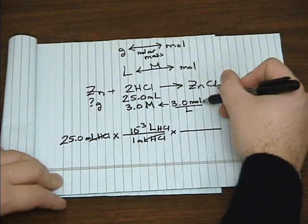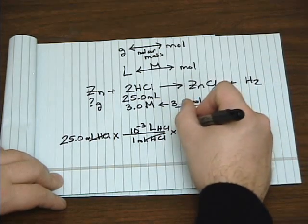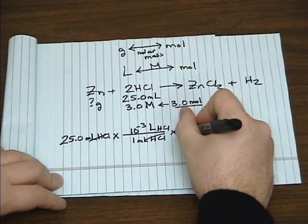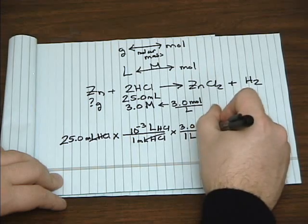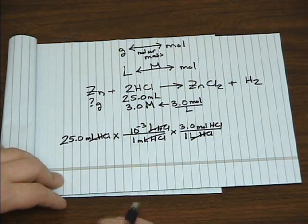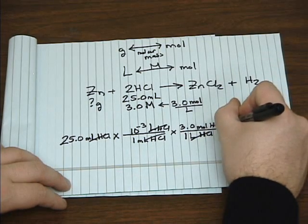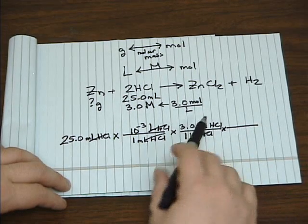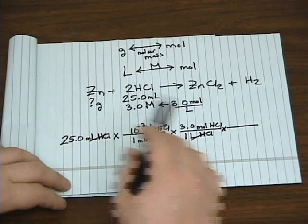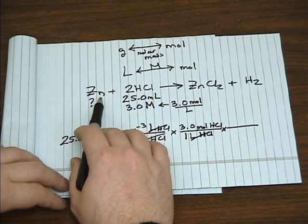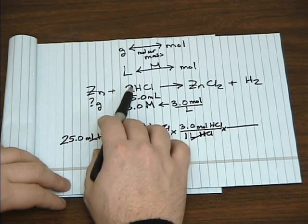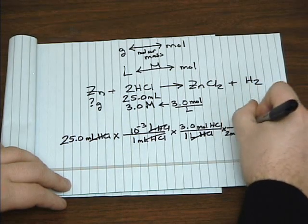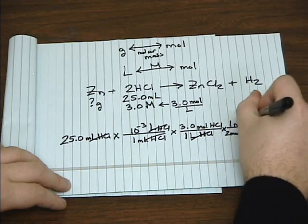And since it's 3 moles of HCl per liter of solution, we can use that to convert liters of HCl to moles of HCl. And remember, with stoichiometry to go between moles of one substance to moles of another, you look at the balanced chemical equation, and you see between hydrochloric acid and zinc, that's a 2 to 1 ratio, so it's 2 moles of HCl per 1 mole of zinc.